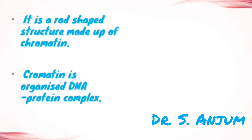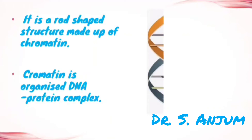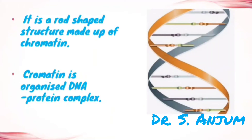Due to cell division, the thread-like chromatin gets reorganized and condensed to form a rod-shaped structure called a chromosome. Chromosomes are predominantly made up of DNA, and all the necessary information for the proper functioning of the cell is stored here.